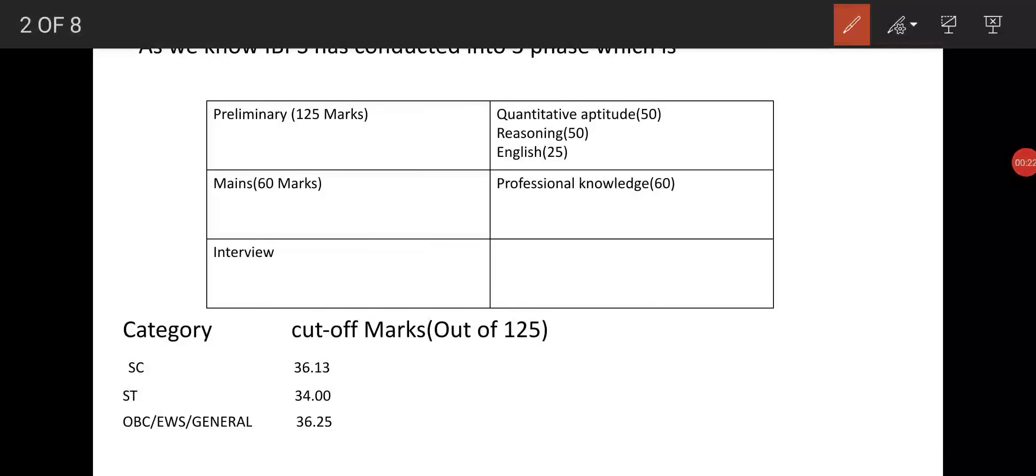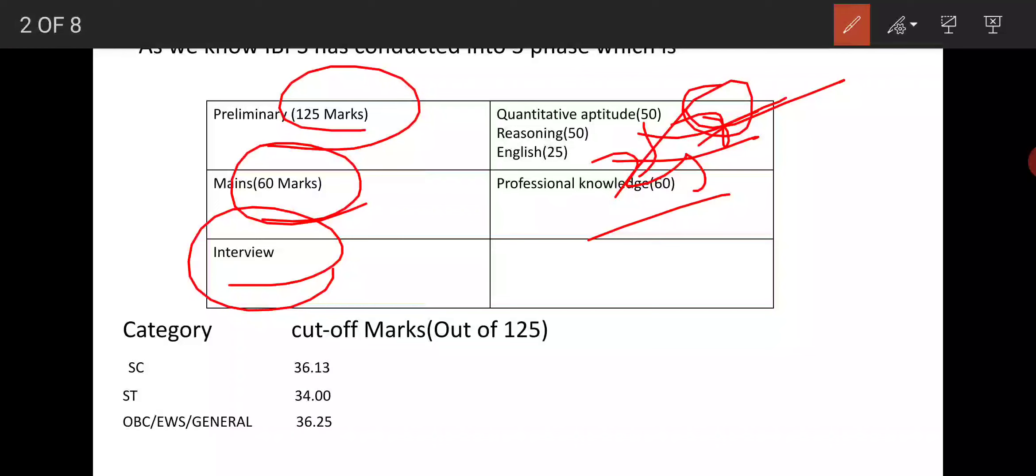As we know, IBPS SO AFO is conducted in three phases: Preliminary has 125 marks, Mains has 60 marks, then personal interview is based on your performance. Preliminary has three basic subjects: Quantitative Aptitude has 50 marks, Reasoning has 50 marks, English has 25 marks. Mains has 60 marks and Professional Knowledge in Agriculture is also 60 marks.